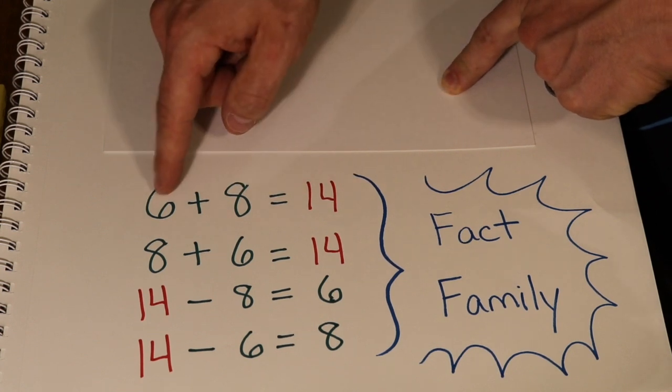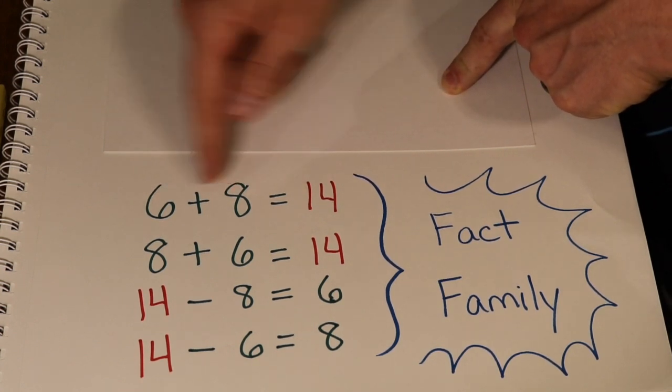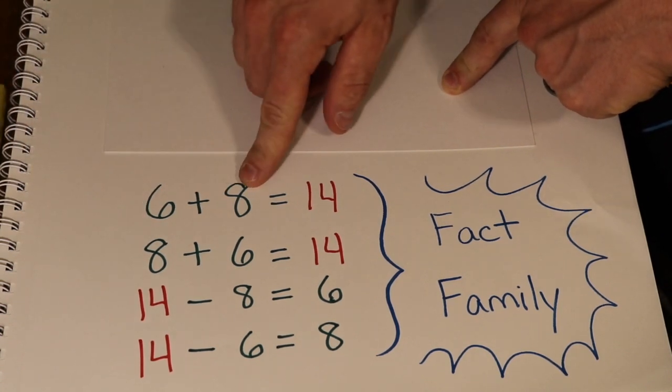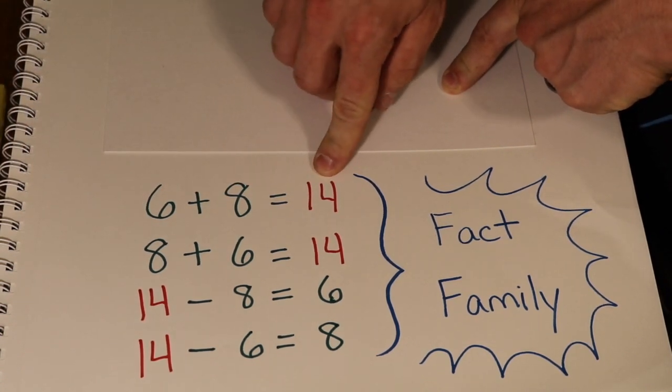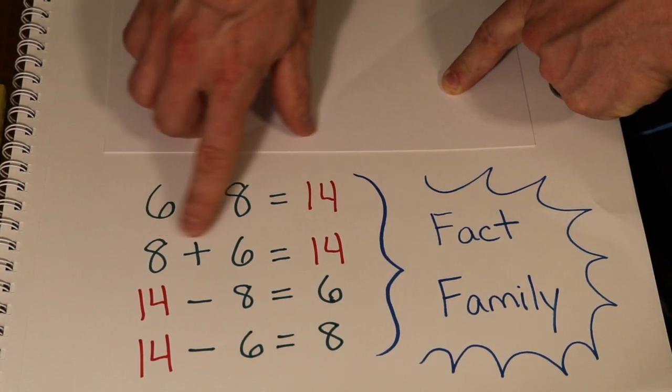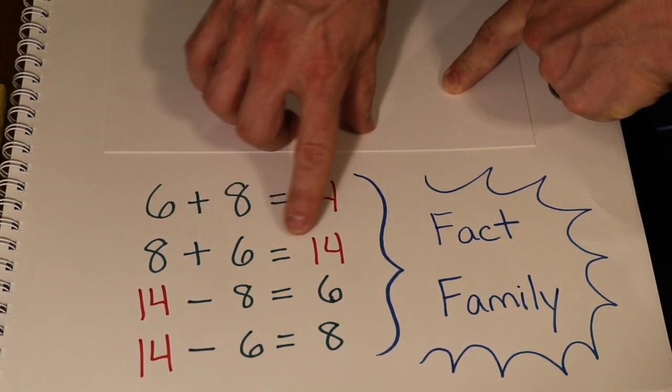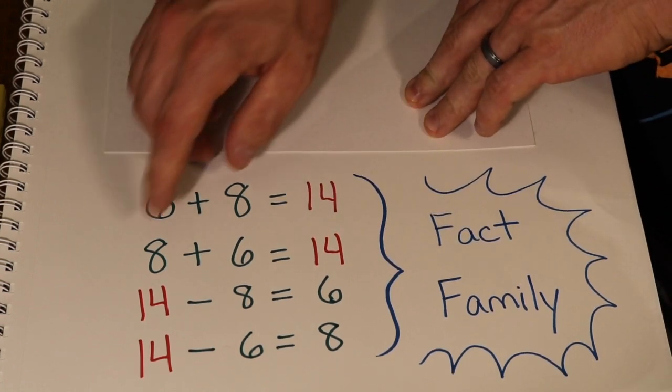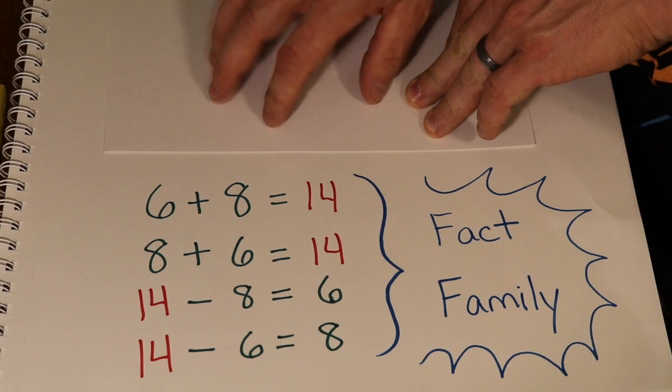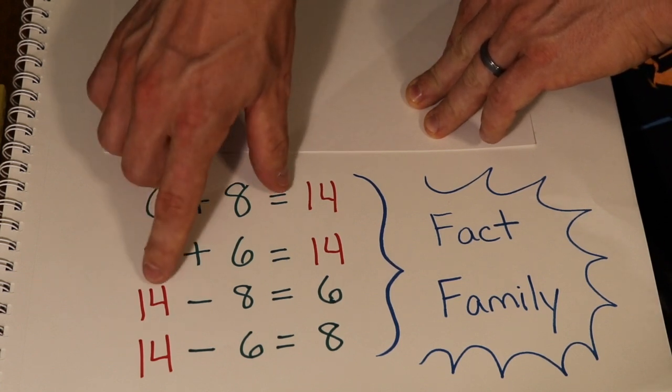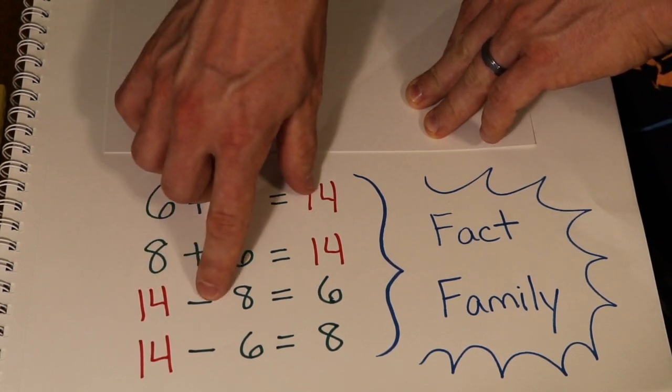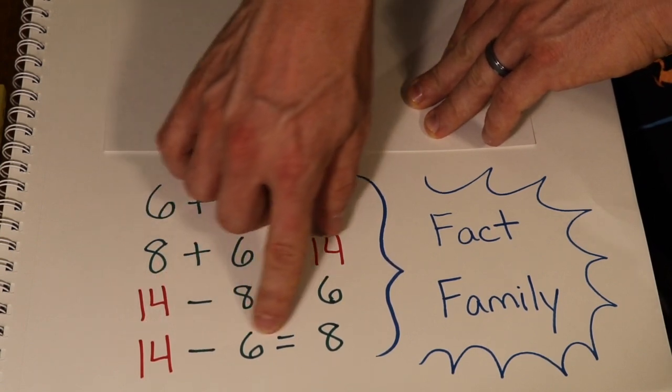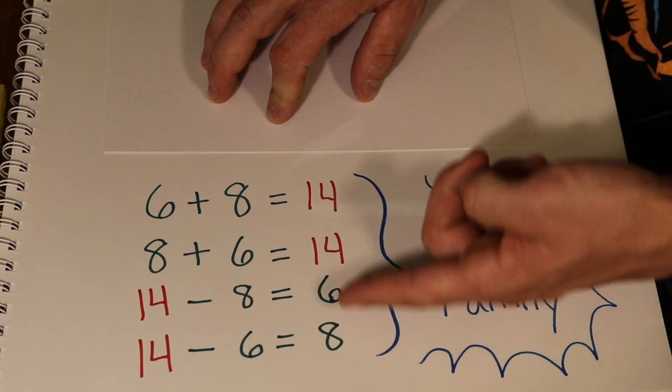For example, you can look at 6 and 8 as two addends in these addition equations: 6 plus 8 equals 14, or 8 plus 6 equals 14. You can also look at it from subtraction: 14 minus 8 equals 6, or 14 minus 6 equals 8. These are your two differences.